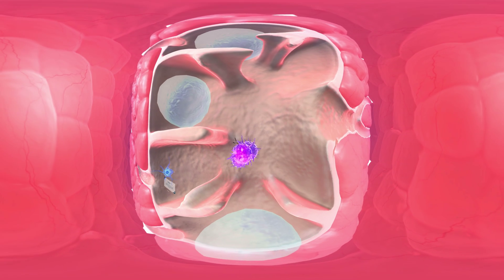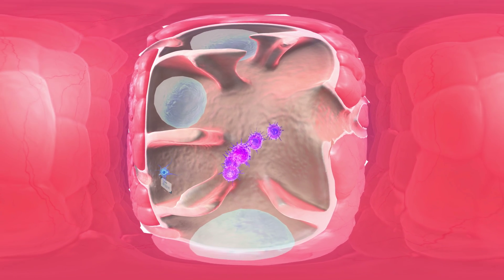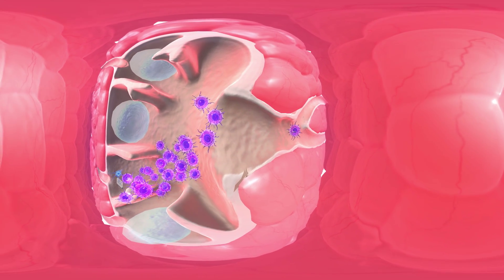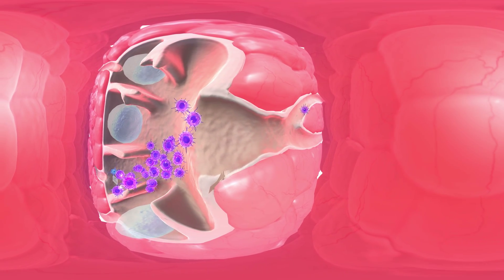The T cells are in turn educated to recognise cancer. They rapidly divide and this army of now killer T cells heads for the cancer, ignoring healthy tissue.